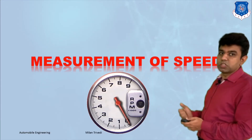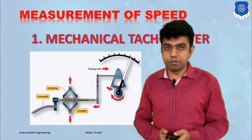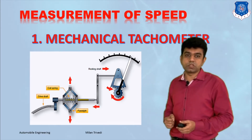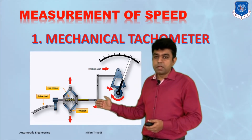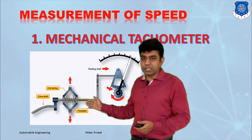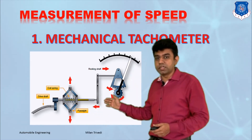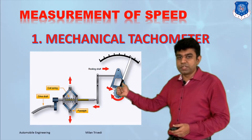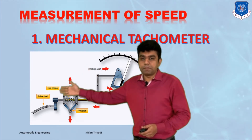Let us start with the first measurement — speed, that is the measurement of revolutions per minute of the engine. The first type is the mechanical tachometer, which uses the principle applied in a governor. An input shaft is coupled to a governor-like setup with two masses attached at the end. As the shaft rotates, the attached weights spin, and due to centrifugal force the spring in between gets compressed, causing a certain displacement, which is transmitted through a gear arrangement to a pointer indicating the engine speed.